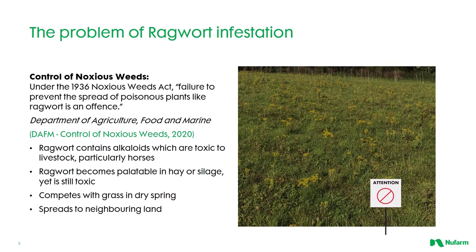Under the 1936 Noxious Weed Act, failure to prevent the spread of poisonous plants like ragwort is an offense. Ragwort contains alkaloids which are toxic to livestock, particularly horses. Ragwort becomes palatable in hay or silage, yet it's still toxic at that stage. It competes with grass in a dry spring like any other broadleaf weed, and it can spread to neighboring land and fields through seed.